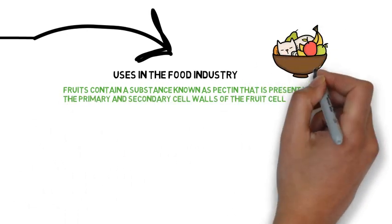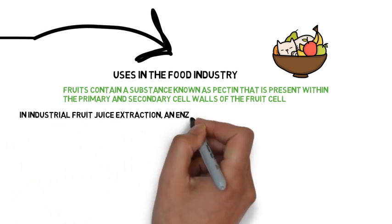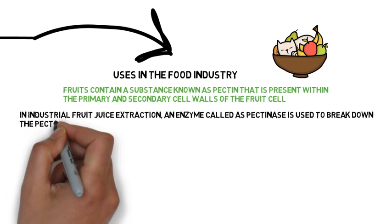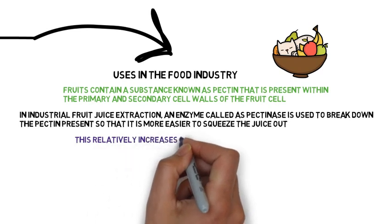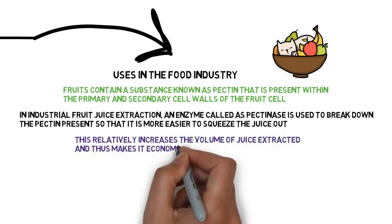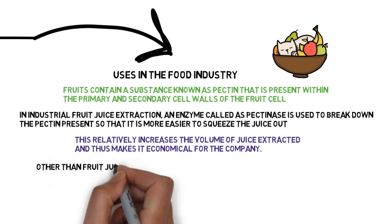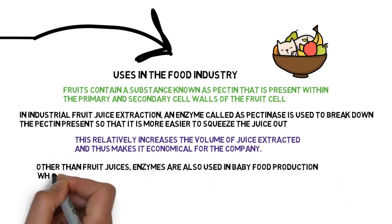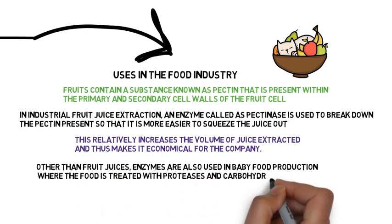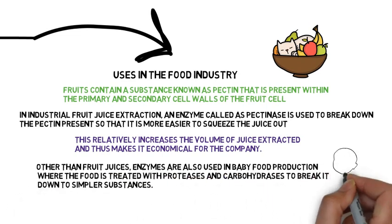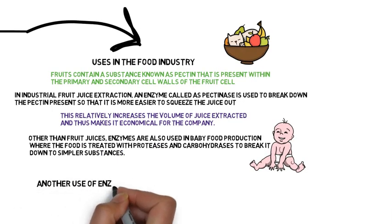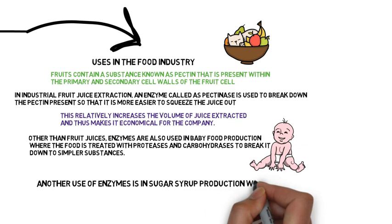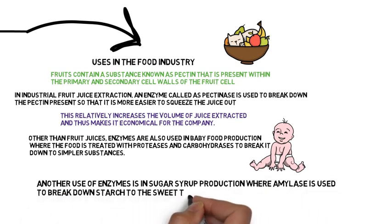In industrial fruit juice extraction, an enzyme called pectinase is used to break down the pectin present so that it is easier to squeeze the juice out. This relatively increases the volume of juice extracted and thus makes it economical for the company. Enzymes are also used in baby food production, where the food is treated with proteases and carbohydrases to break it down to simpler substances, helping the baby's body to easily absorb the food with indigestion prevented. Another use of enzymes is in sugar syrup production, where amylase is used to break down starch to the sweet-tasting disaccharide maltose.